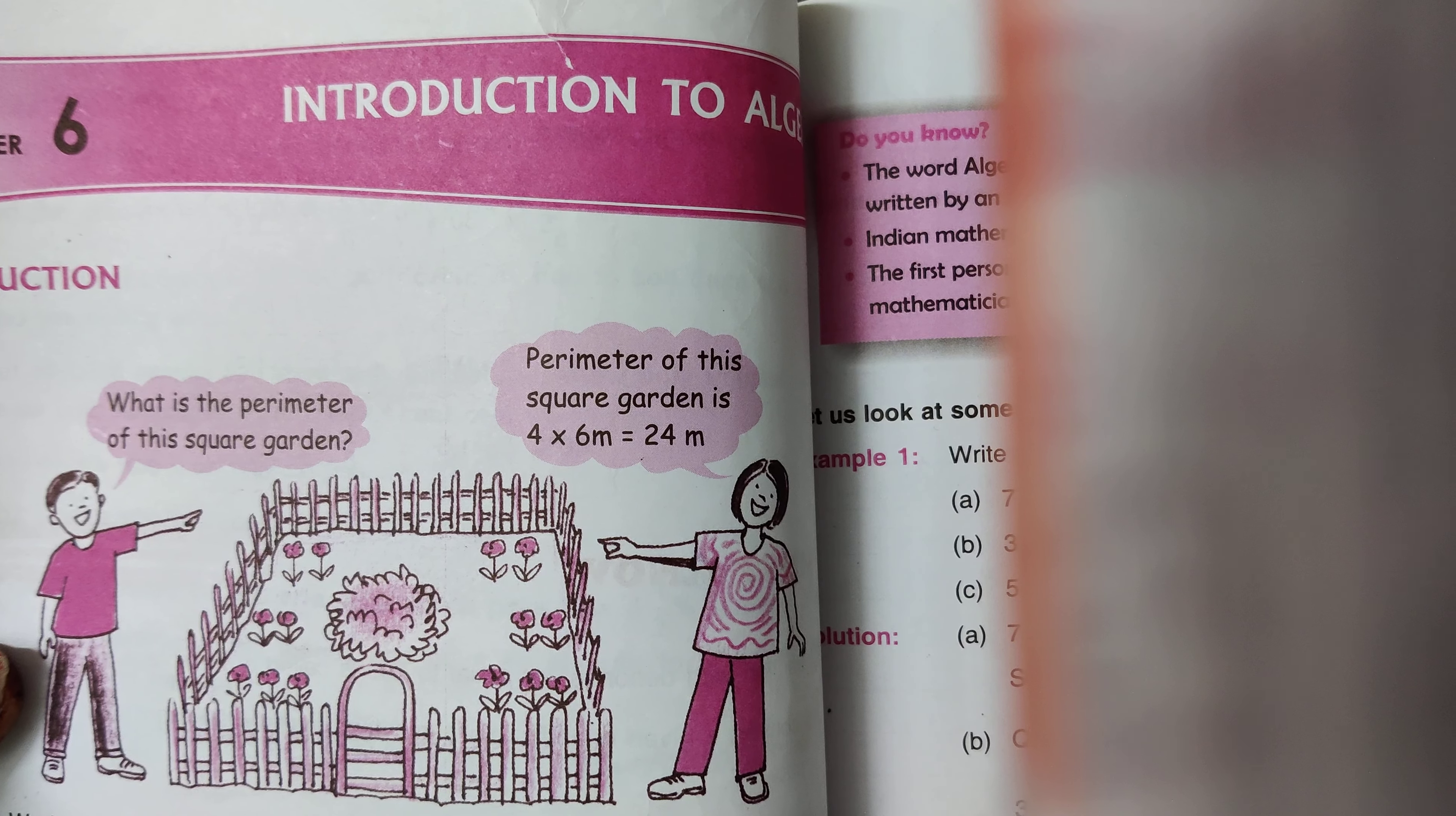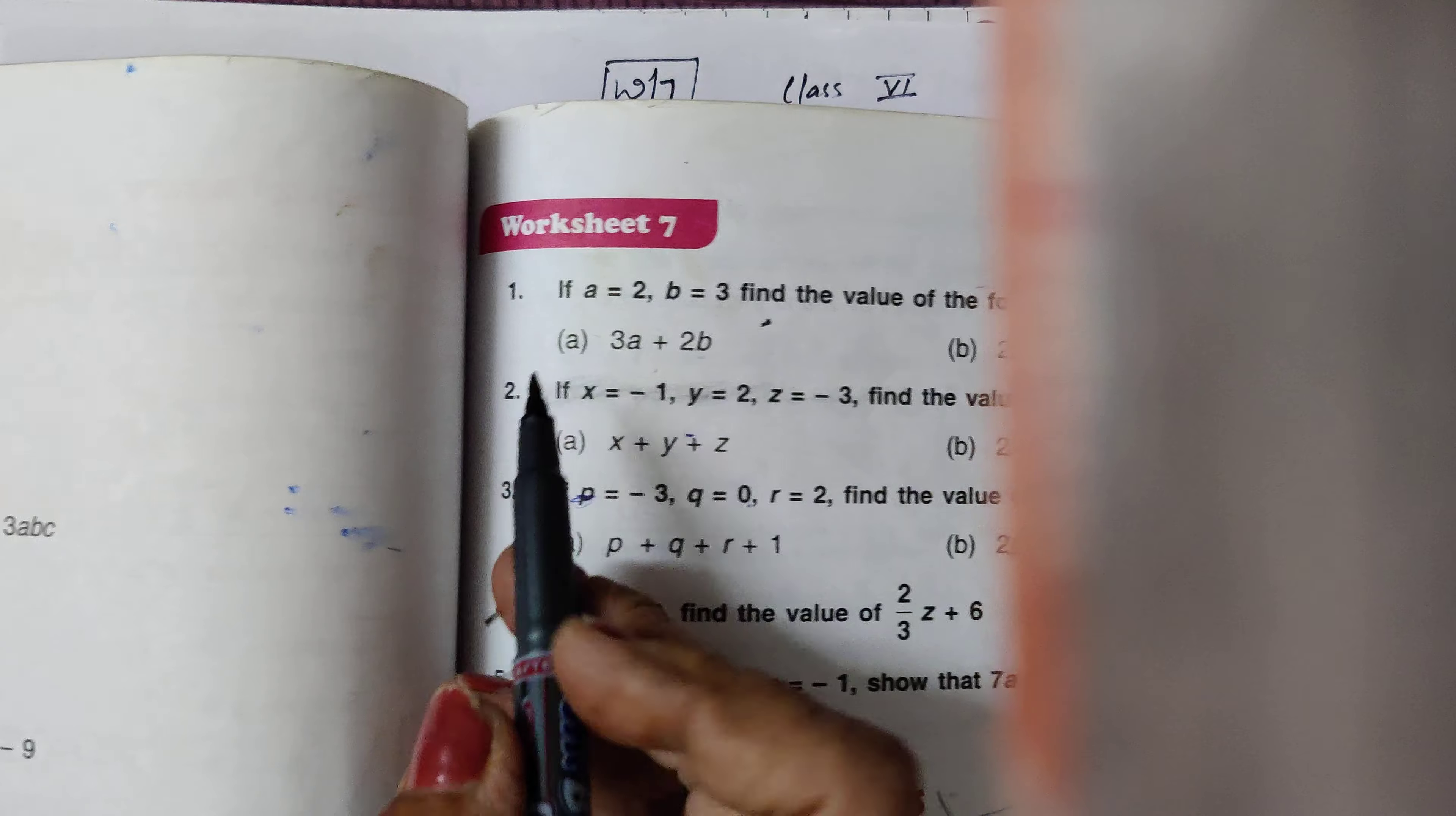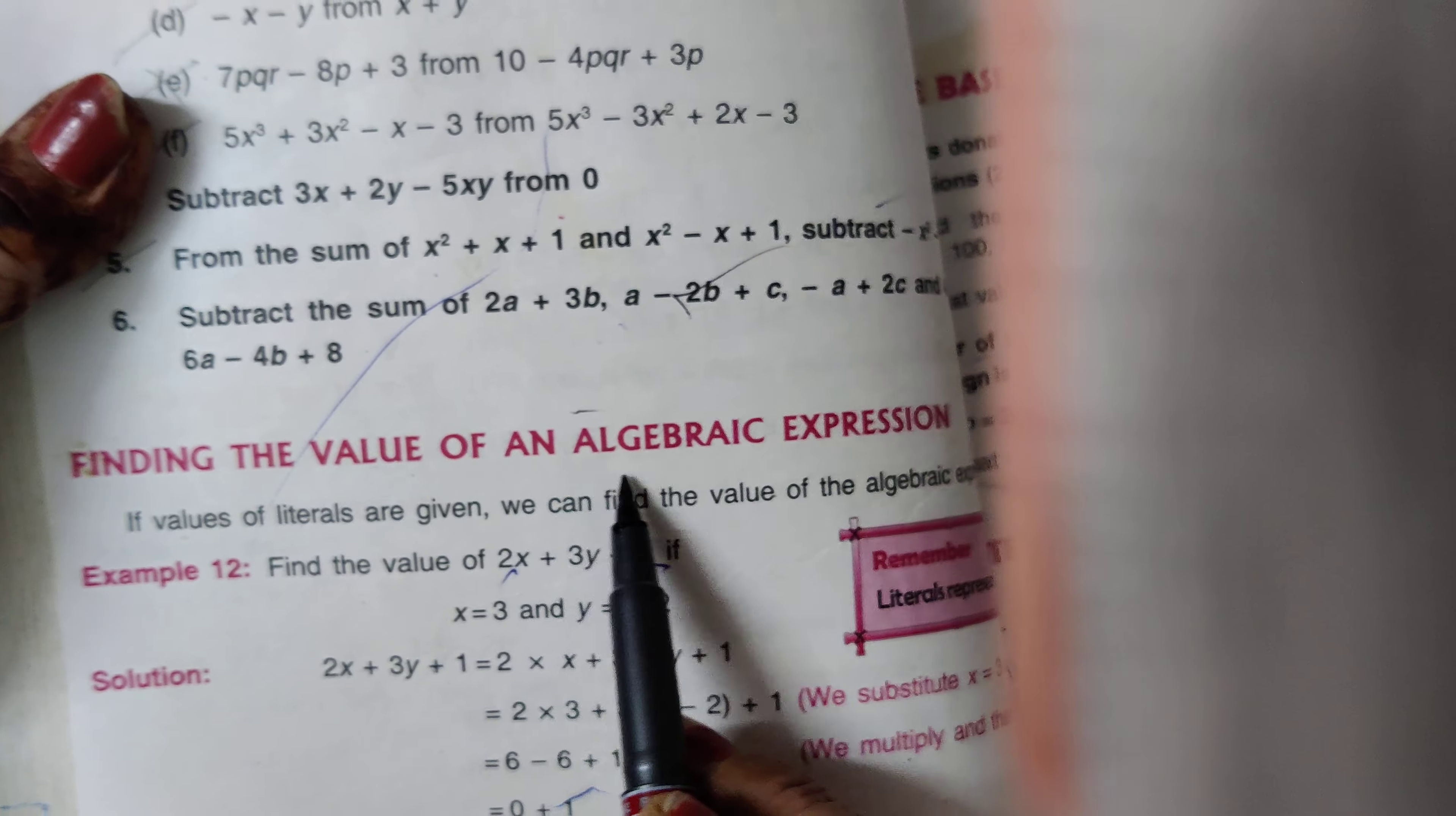In this chapter, there is addition, subtraction, multiplication, division that is in 7th standard. But in 6th standard, addition, subtraction of the algebraic expressions. Now we are going to start worksheet number 7. That is worksheet number 7, Finding the Value of an Algebraic Expression.